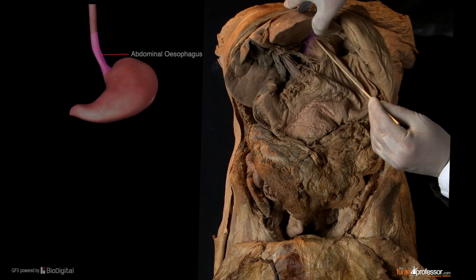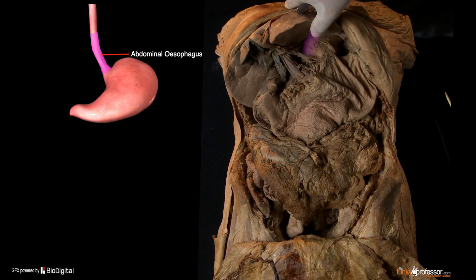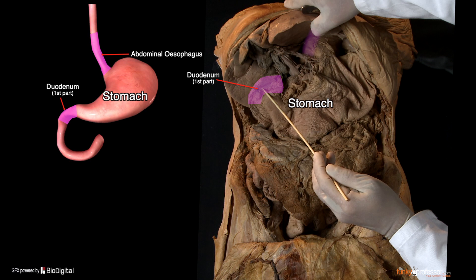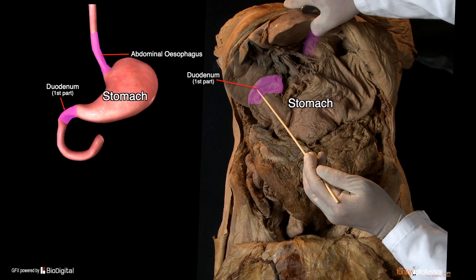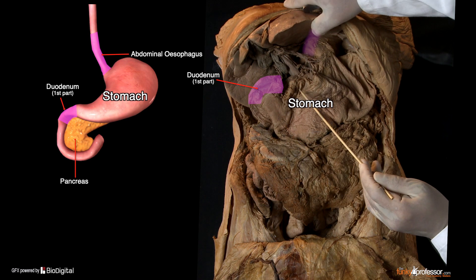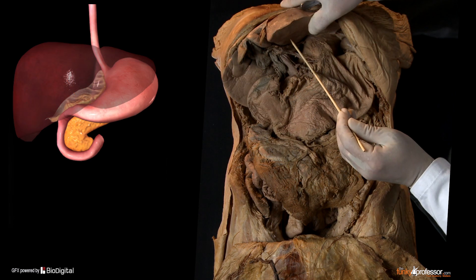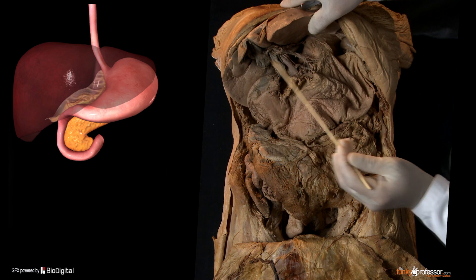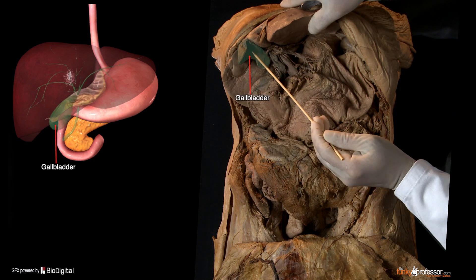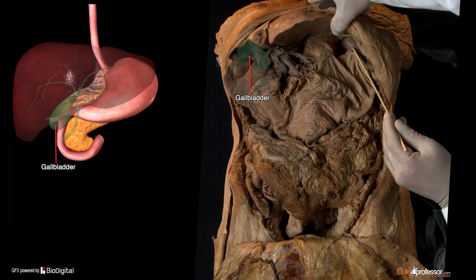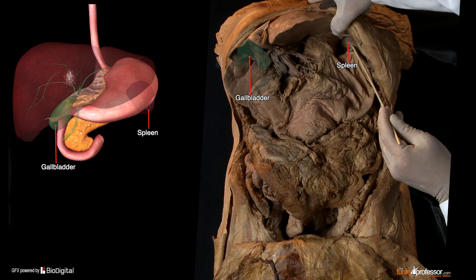In the supracolic compartment is the abdominal esophagus — the very terminal bit of the esophagus — succeeded by the stomach, in turn succeeded by the duodenum. Closely related to the duodenum is the pancreas. In addition, the lesser omentum extends from the lesser curvature of the stomach to the liver. The liver is another very important content of the supracolic compartment, and on the undersurface of the liver is the gallbladder, which connects with the extrahepatic biliary tract. Finally, in the depths of the left upper quadrant is an important lymphoid organ — the spleen.